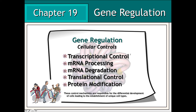The regulation of the eukaryotic genome leading to the differential development of cell types can occur in a number of different ways. Methods associated with transcriptional control, messenger RNA processing or degradation, translational control, and even the modification of proteins post-translation can all have a significant influence on the development and establishment of a particular cell type.